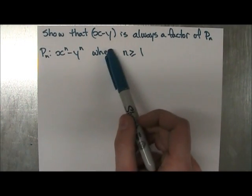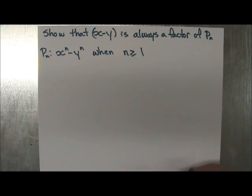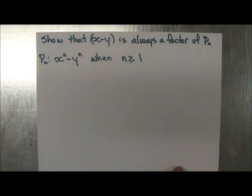Alright, so here's today's question. It says, show that x minus y is always a factor of P_n, and P_n is x to the n minus y to the n when n is greater or equal to 1. So a little different looking, different from the ones we had before, but always follow the three steps of mathematical induction.